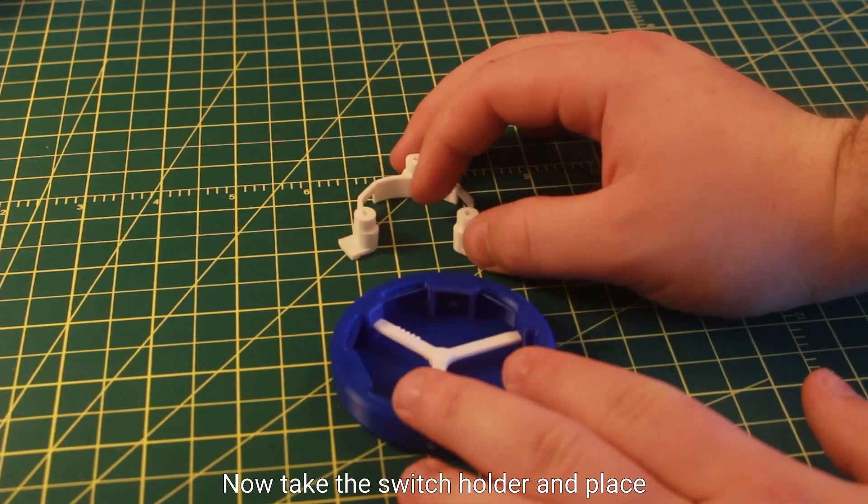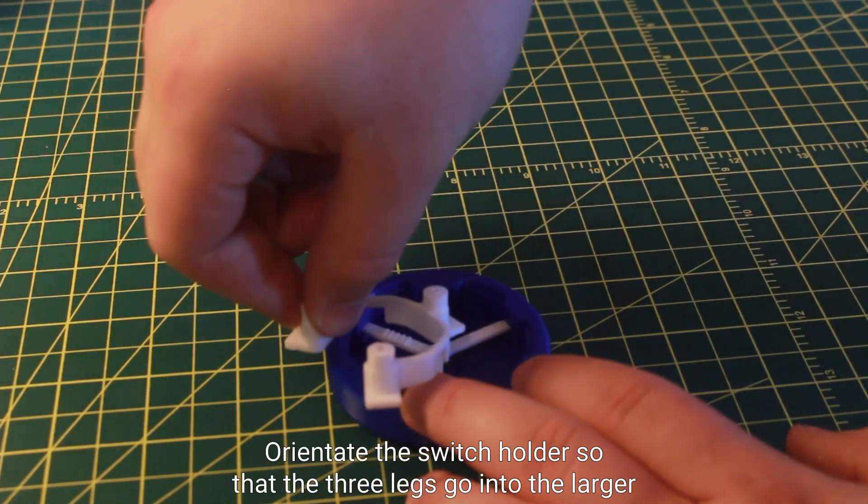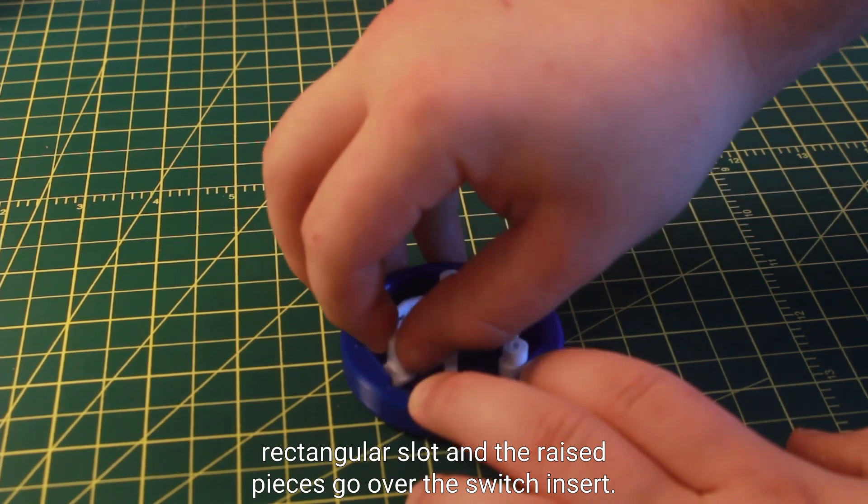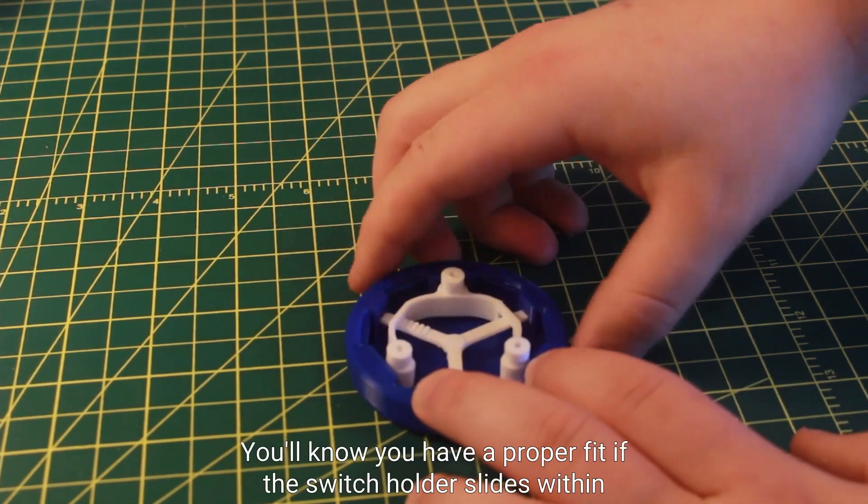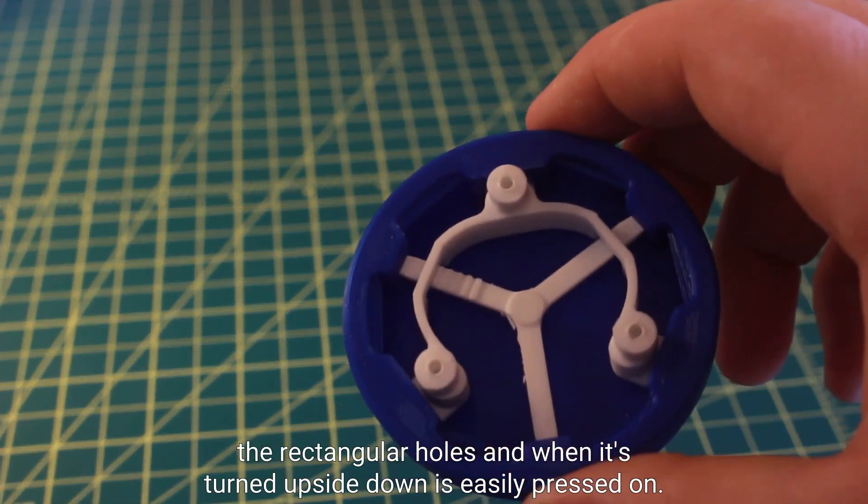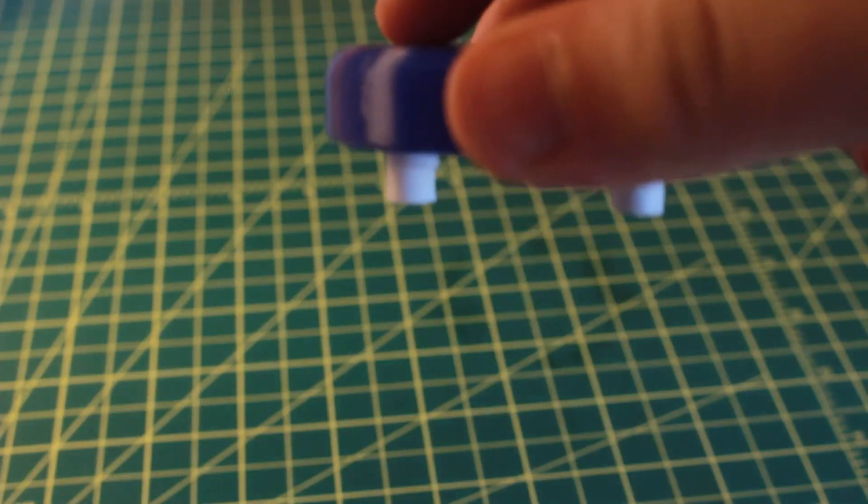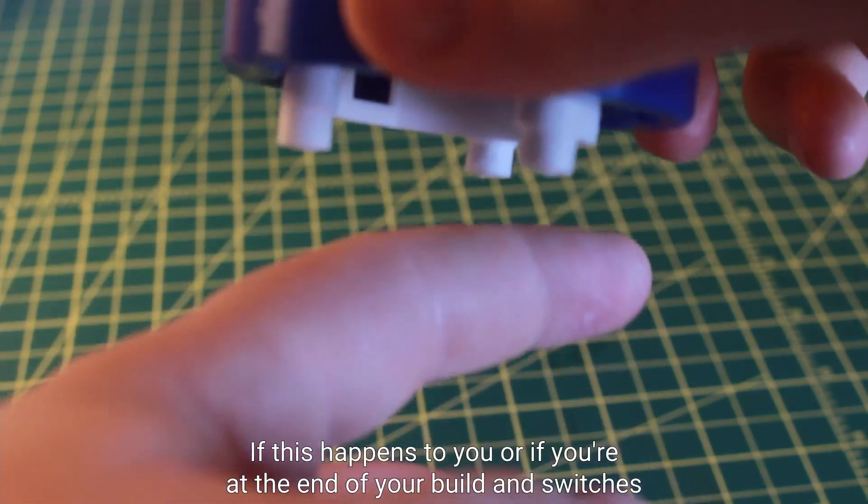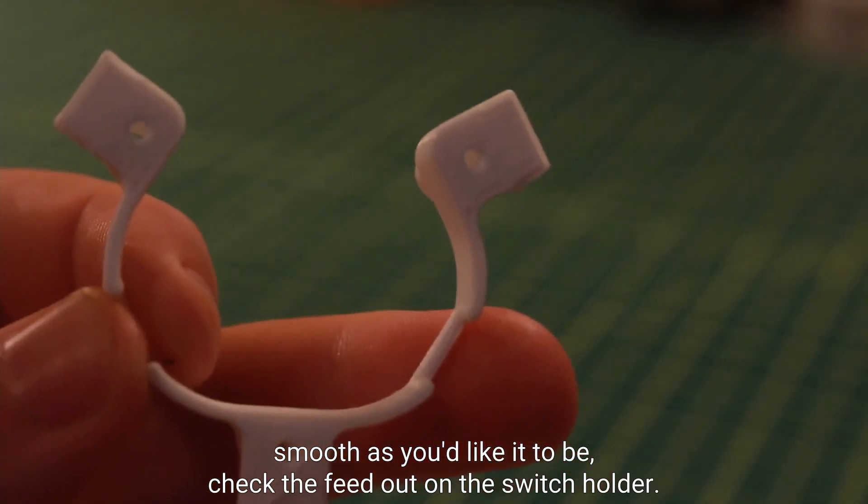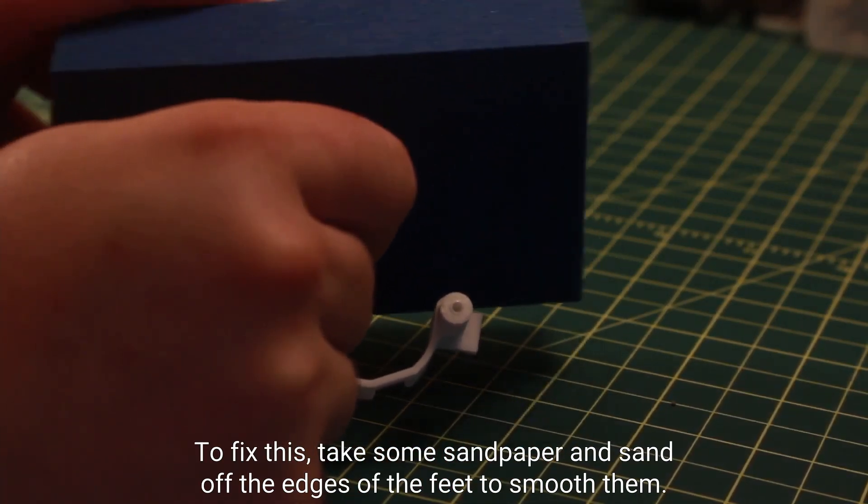Now take the switch holder and place it on top of the switch insert with the cylindrical holes facing out. Orientate the switch holder so that the three legs go into the larger rectangular slot and the raised pieces go over the switch insert. You'll know you have a proper fit if the switch holder slides within the rectangular holes and when it's turned upside down is easily pressed on. As you can see, one side of mine gets stuck. If this happens to you or if you're at the end of your build and the switch isn't as smooth as you'd like it to be, check the feet out on the switch holder. Some may have some excess filament causing friction between the components. To fix this, take some sandpaper and sand off the edges of the feet to smooth them. If you don't have sandpaper, you can use the flush cutters and cut a very small bit off the edges.